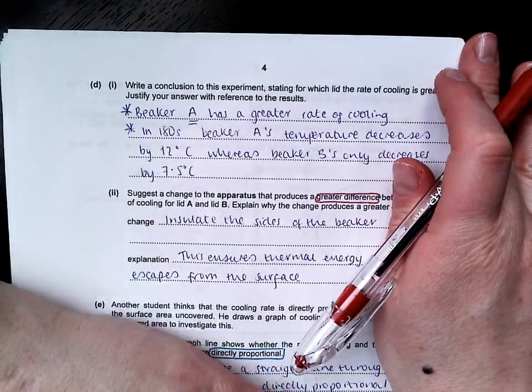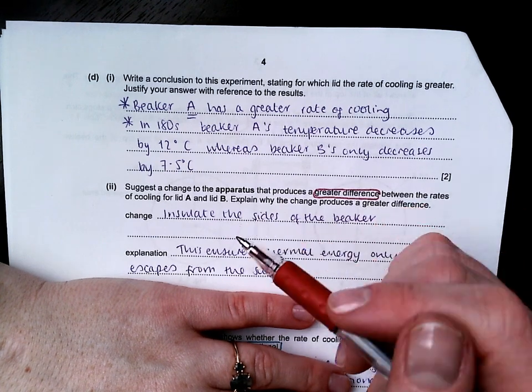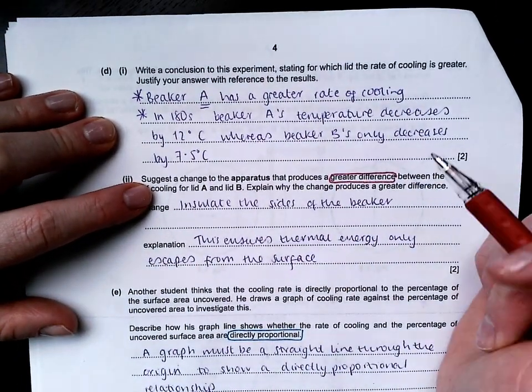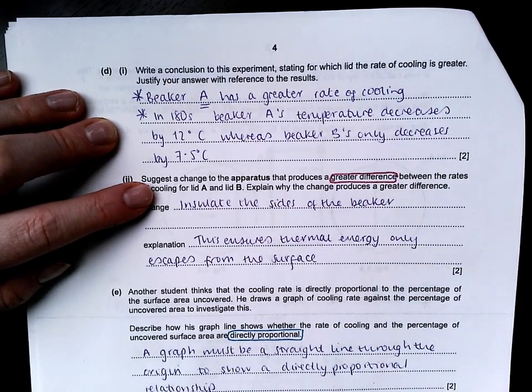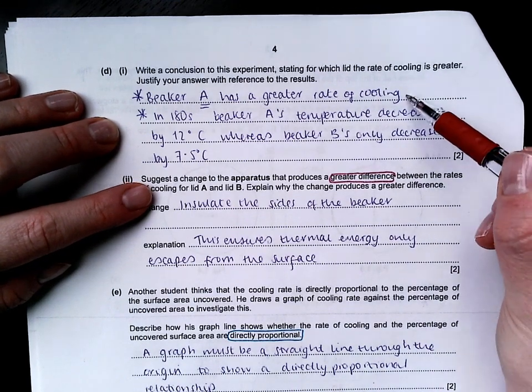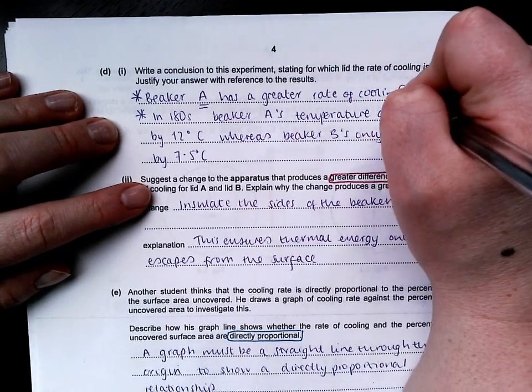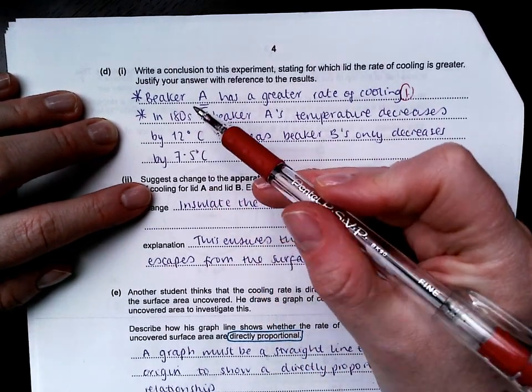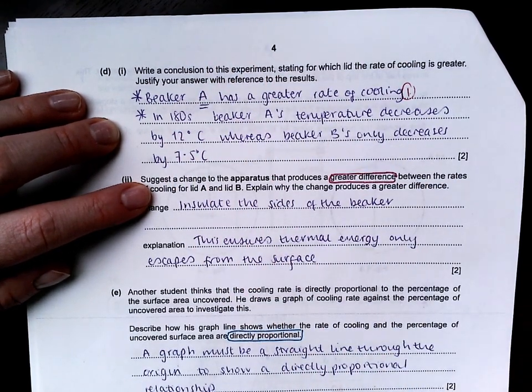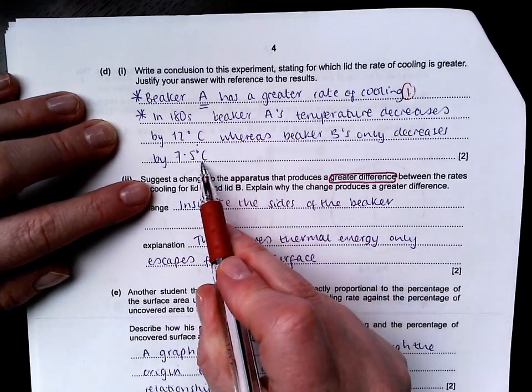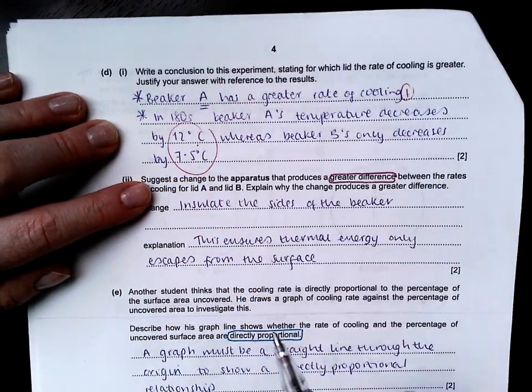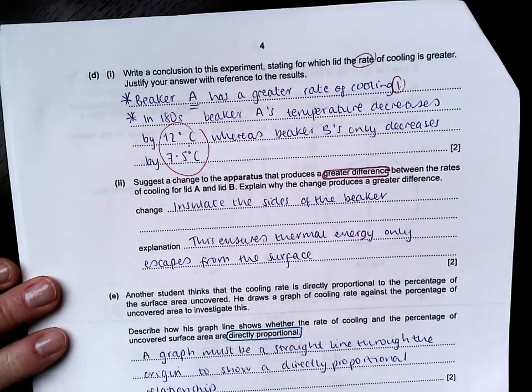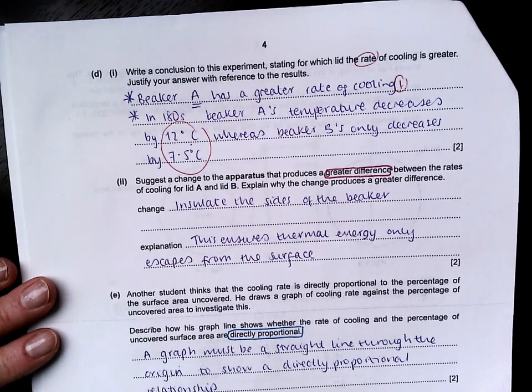In part DI, it says write a conclusion to this experiment stating for which lid the rate of cooling is greater. When we practiced heating and cooling practicals, I told you that this always gets asked. One mark for correctly identifying which one is bigger. Beaker A has a greater rate of cooling. Reference to the results, you have to talk about both values, your time and your temperature change. In 180 seconds, beaker A's temperature decreases by 12 degrees Celsius, whereas beaker B's only decreases by 7.5 degrees Celsius. You have to refer to the fact that it's over the same time period because rate of cooling is how quickly it happens.